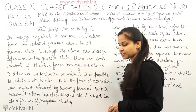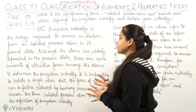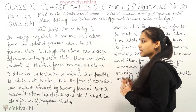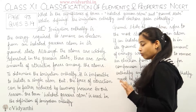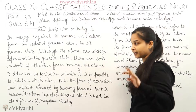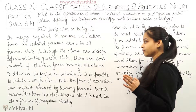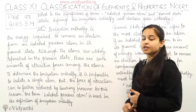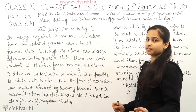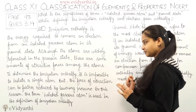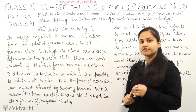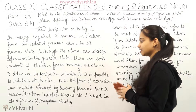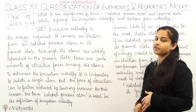Although atoms are widely separated in the gaseous state, there are some attractive forces among the atoms. To determine the ionization enthalpy, it is impossible to isolate a single atom. However, the force of attraction can be further reduced by lowering the pressure. For this reason, the term 'isolated gaseous atom' is used in the definition of ionization enthalpy.